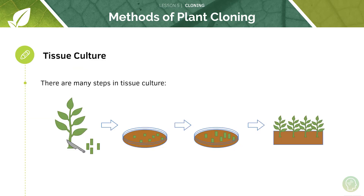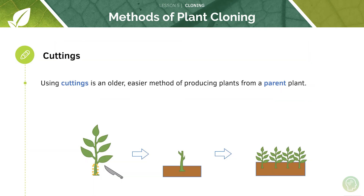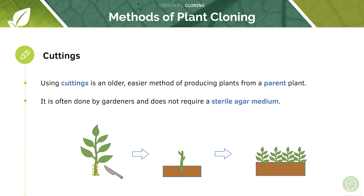Now let's move on to another method of plant cloning: cuttings. Using cuttings is an older, easier method of producing plants from the parent plant. Certain parts of the plant are removed, including branches, leaves and tips. The stem is then replanted in compost, and plant hormones are added to the compost to encourage growth. The compost used must be damp to allow access to water for the plant. This method is often done by gardeners and does not require a sterile agar medium as with tissue culture — it's a much simpler method.